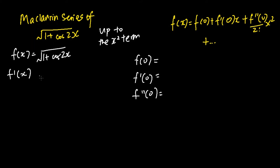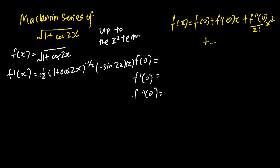Next we differentiate the function once. We get negative sine 2x times (1 plus cosine 2x) to the power of negative half, then differentiate the internal part to get negative sine 2x times 2. So half times 2 gives 1, and we simplify f'(x) to get negative sine 2x times (1 plus cosine 2x) to the power of negative half.